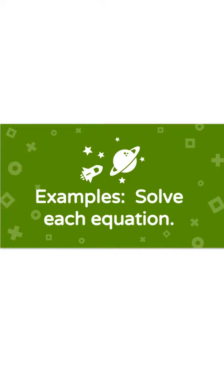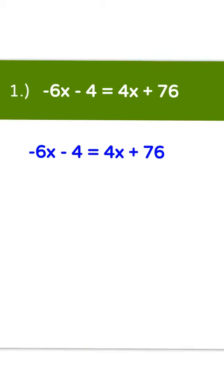Here are some examples. Solve each equation. Number 1: negative 6x minus 4 equals 4x plus 76. There are no parentheses, so we do not need to distribute, and we do not need to combine like terms because there are no like terms on either side of the equal sign. The first step is to get the variable on one side, so we want to get the positive 4x away from the right side by subtracting 4x.